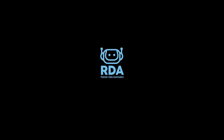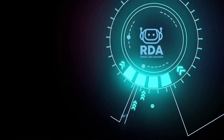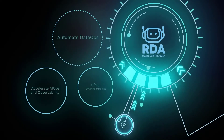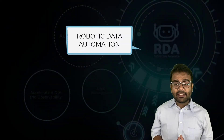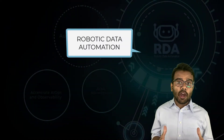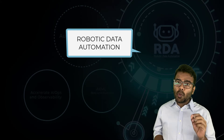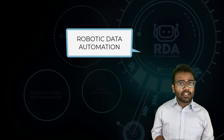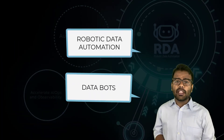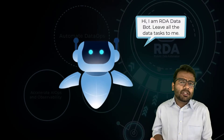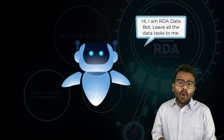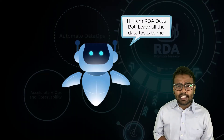Today I'm super excited because I'm going to talk about Cloud Fabric's newest innovation which is RDA. RDA stands for Robotic Data Automation. The one thing that you're going to hear and see and interact with very frequently are the RDA data bots, which are going to do some useful data tasks for you while you sit back and enjoy your coffee. But don't worry, I'll get into the details pretty soon.